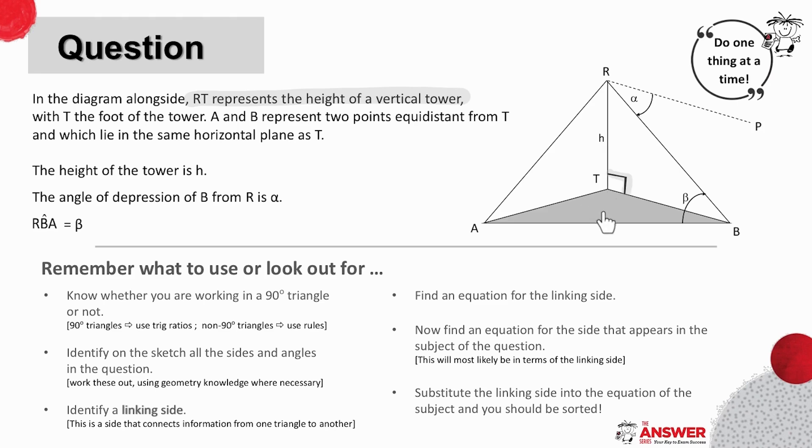The shading also helps to see what lies on the same horizontal plane. We are given that A and B represent two points equidistant from T, and which lie in the same horizontal plane as T.